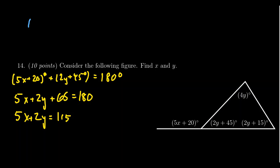If we take 4y degrees plus 2y plus 45 degrees plus 2y plus 15 degrees, this is going to equal 180 degrees.